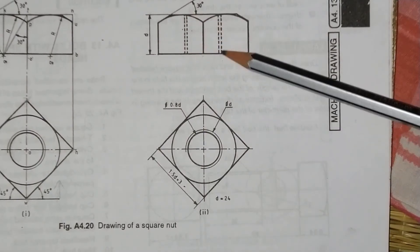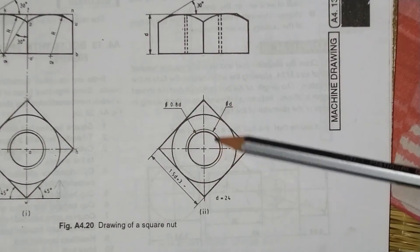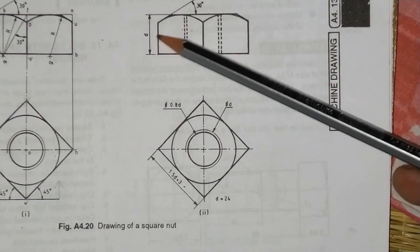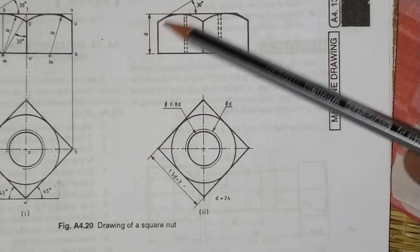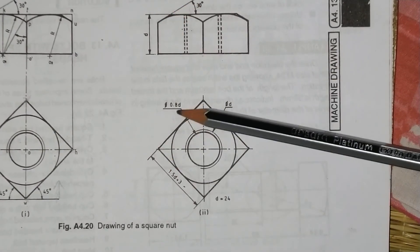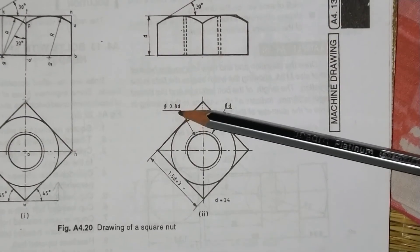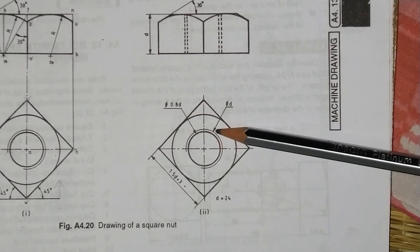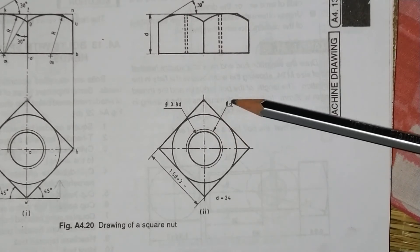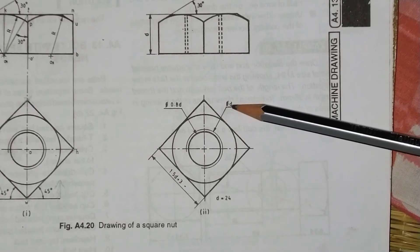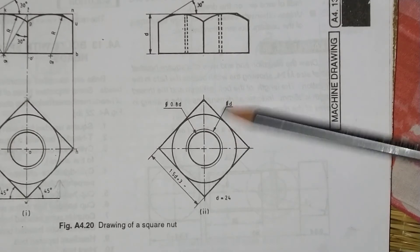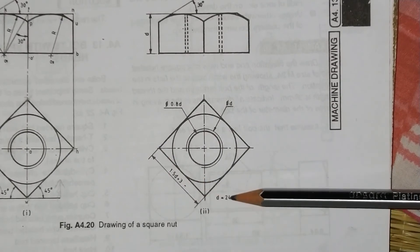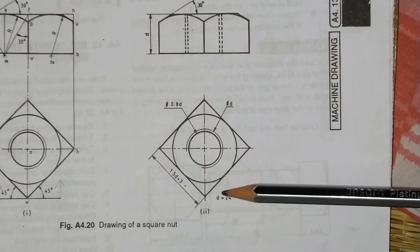The dotted line is used here. The center line is not dotted. This is completed. The diameter is 0.8d for the minor diameter. The major diameter is 1.5d plus 3, where d equals 24. This is completed.